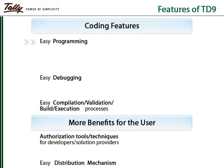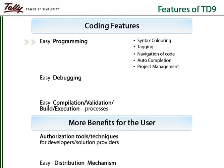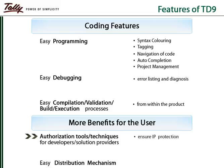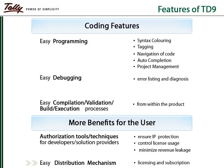To make programming easy, color coding of various syntax components, tagging of code, and various other features have been provided. Error listing and diagnosis is done by the product. Validation, compilation, building and execution of code can be done in a few simple steps. Authorization techniques prevent malpractice and minimize revenue leakage. Easy licensing and subscription processes provide a hassle-free experience to the TD9 user.